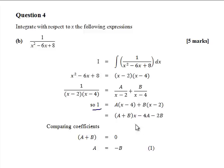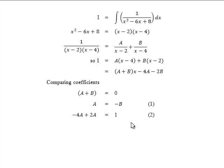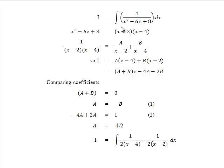Comparing constant terms: on the left we have 1, on the right we have minus 4A minus 2B. Substituting A equals minus B, we get minus 4A plus 2A equals 1, so minus 2A equals 1, giving A equals minus one half. Since A equals minus one half, B equals one half.